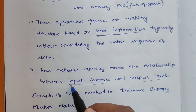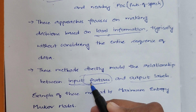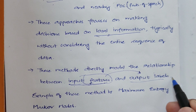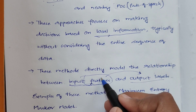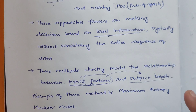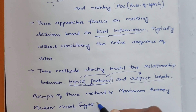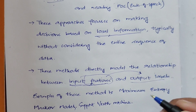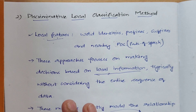Whatever sequences we give to the system, it takes only the features as input, and the output you get is the labels — the sentence boundary or topic boundary. By feeding the features, we get the labels of that particular sentence. The most common examples of this method are the maximum entropy Markov model and support vector machines, which also come under the discriminative local classification method.